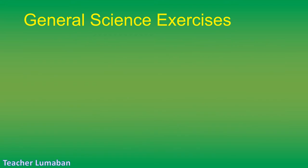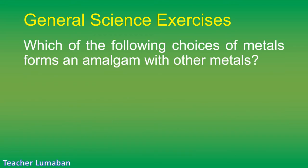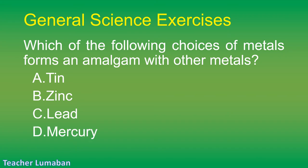Which of the following metals forms an amalgam with other metals? Letter A: tin. Letter B: zinc. Letter C: lead. Letter D: mercury.